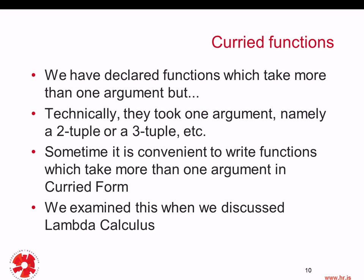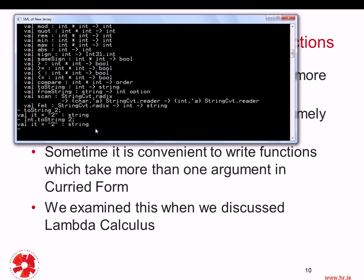Now we're coming back to an issue that we talked about when we were discussing lambda calculus, the theoretical foundation behind functional programming languages. What we have been looking at when discussing ML is that we have been declaring functions which take more than one argument. But technically, they actually took one argument, namely a two-tuple or a three-tuple. For example, we defined a function called first this way, and we said first takes two arguments, x and y, and returns x.